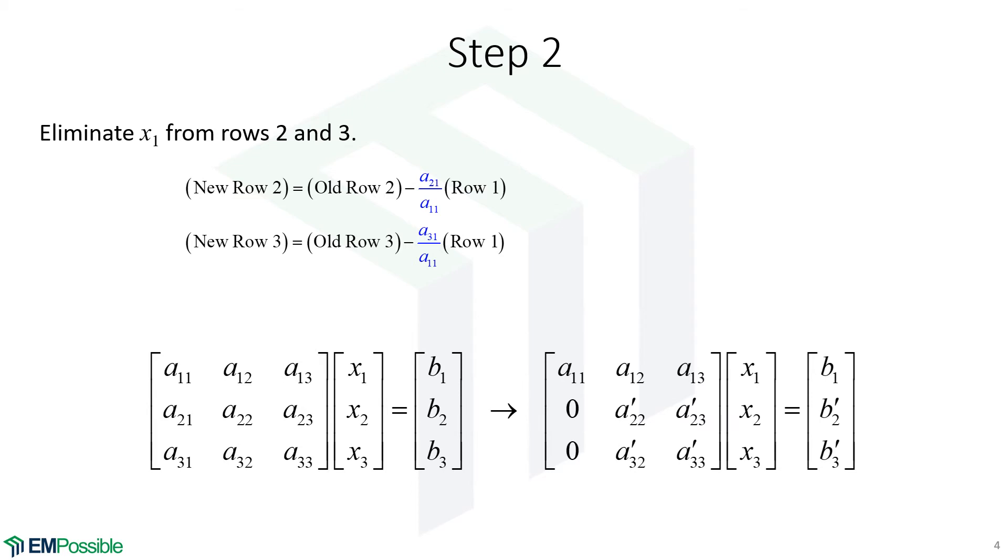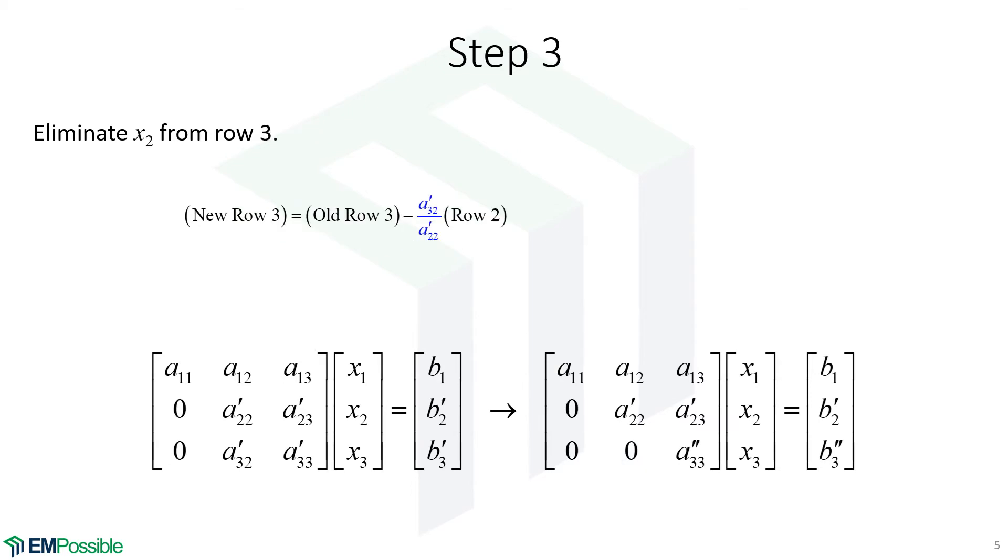Now we'll move on to the next row. What we want to do now is eliminate X2 from the third row. And so what we'll do is we'll take the second row, divide by the new diagonal element. That's the A22 prime. That puts a one in this position, which makes it very easy to figure out what constant to multiply this by so that when we subtract row two from row three, we get a zero in this position. And in fact, that's what this constant does. So the new row three is the old row three minus row two multiplied by this constant. And that puts a zero in this position.